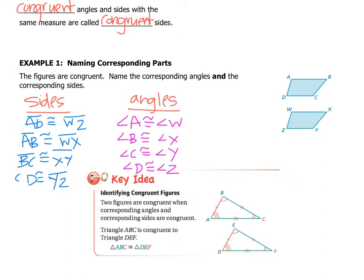Oh, I just realized over on top of CD over here, I forgot my little side segment line. There we go. Don't forget that. Now, if you figure out that two shapes have congruent sides and congruent angles, then you can say that the shapes are congruent figures.